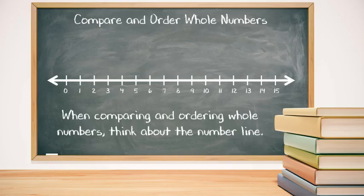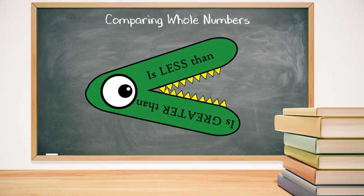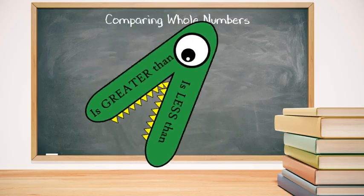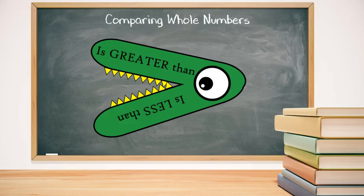Let's check this out. Remember the inequality alligator? When facing right, it's less than, but when facing left, it's greater than. So basically he always eats the greater numbers.